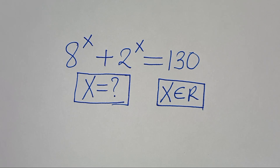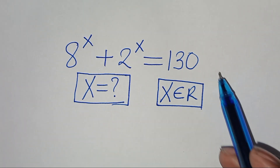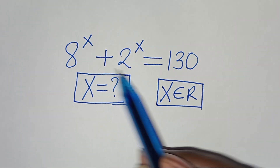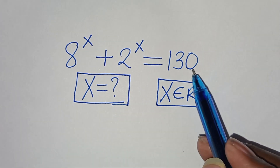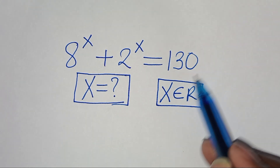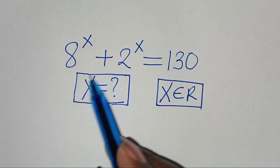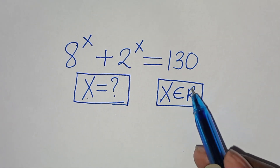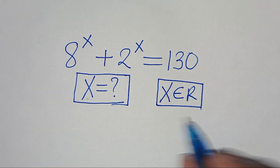You're welcome to solve this nice exponential equation, which is 8 to the power of x plus 2 to the power of x, and this is equal to 130. So what is the value of x, given that x is a member of real numbers?